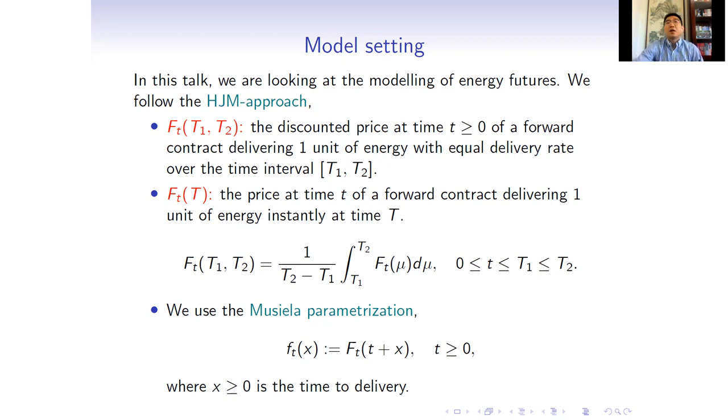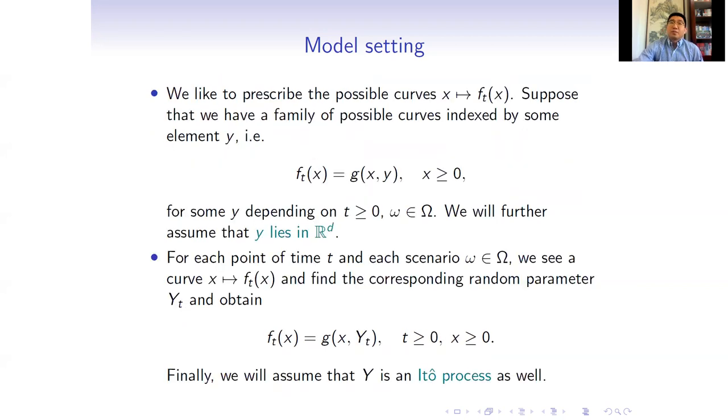The price at time T of a forward contract delivering one unit of energy from T₁ to T₂ is the average instantaneous forward during the delivery period. Throughout this talk, we will transfer HJM equations into Musiela parametrization equations. That is, we observe the price for instantaneous delivery futures in time to maturity rather than time of maturity.